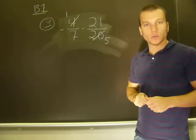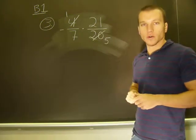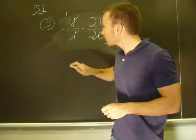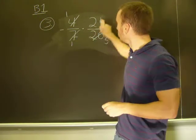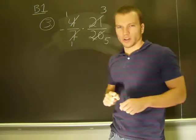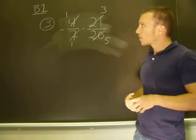Same thing between the 7 and 21. I can see that 7 will go into both of those numbers. 7 into 7 one time, into 21 three times. That's going to make my problem a lot easier now to reduce before I do the multiplication.